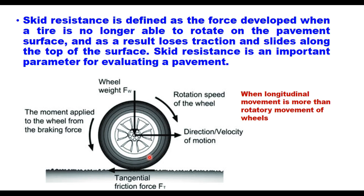A wheel on the surface of the road — the weight acts vertically downward, and this is the direction of movement, so rotatory motion is in the clockwise direction and friction develops at the interface of the wheel and the road surface. When the brakes are applied, the movement applied to the wheel is in the opposite direction of the rotatory motion, and that also creates frictional force.